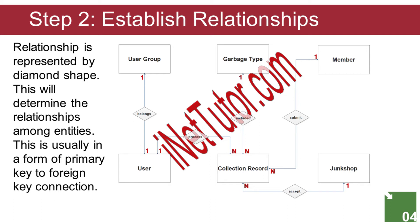A user account belongs only to one user group or category — a one-to-one relationship. A user can process multiple transactions on the collection and record keeping of information submitted by members, covering the list of recyclable materials to be turned over to the junk shop — a one-to-many relationship. Lists of garbage are grouped according to their type and encoded in the collection record — one-to-many. A member can encode the list of garbage or recyclable materials and turn them over to the nearest junk shop to claim their rewards — one-to-many. The junk shop can keep track of records through the collection record module — one-to-many relationship.